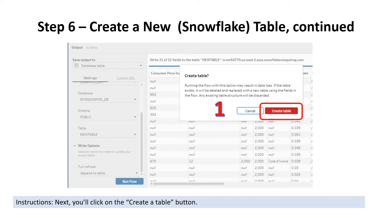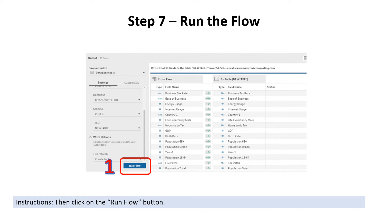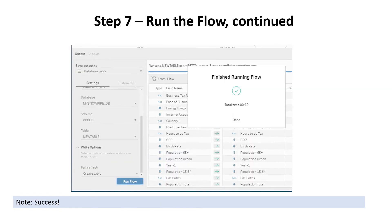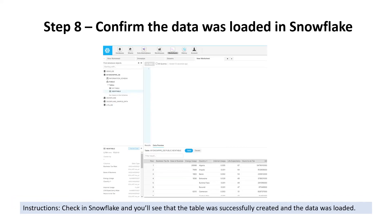Next, you'll click on the Create Table button, then click on the Run Flow button. And that's it — success! We've got our flow run. We'll want to go back into Snowflake and just confirm that the table was successfully created and the data was loaded. And we do that and see that that is indeed the case — we have success.